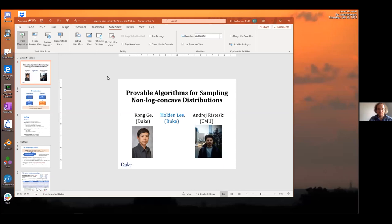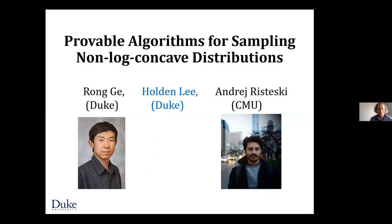It is my great pleasure to welcome Holden Lee to give the One World Seminar on the Mathematics of Machine Learning today. Holden is a postdoc at Duke University, and before going to Duke he obtained his PhD at Princeton where he was advised by Sanjeev Arora. He'll talk about provable algorithms for sampling non-log-concave distributions. One of Holden's collaborators, Andrej Risteski, will be in the chat to answer questions during or after the talk. Thanks for inviting me. Today I'll talk about provable algorithms for sampling non-log-concave distributions, covering joint work with Wang Ge at Duke and Andrej Risteski at CMU.